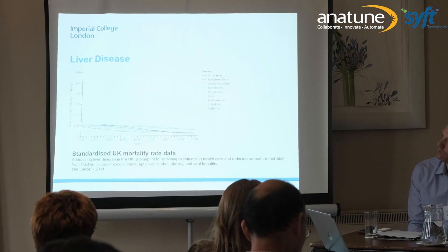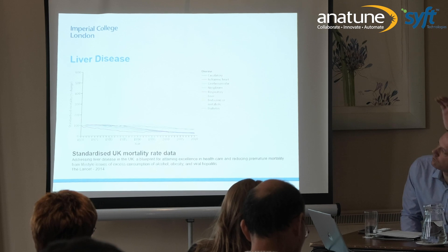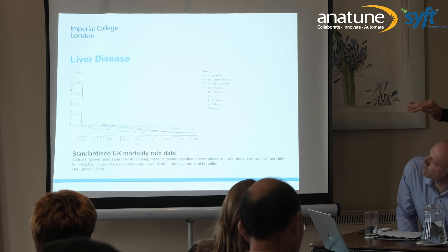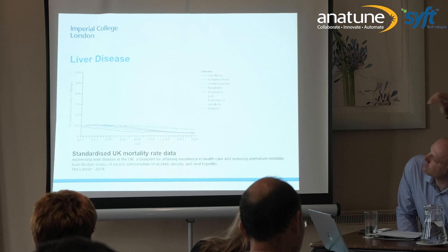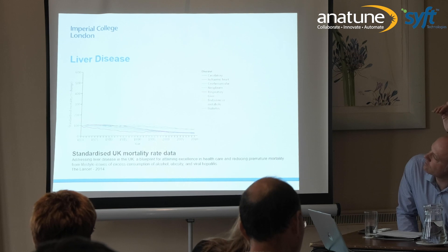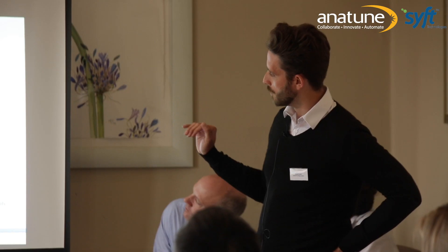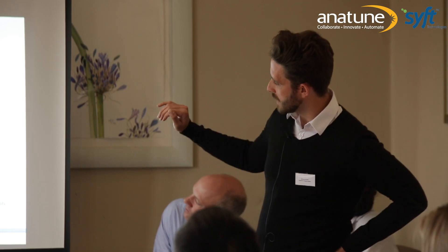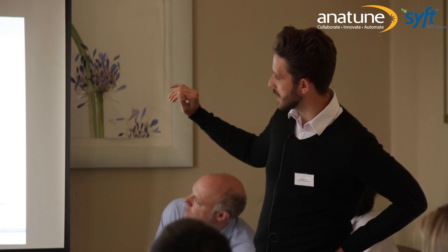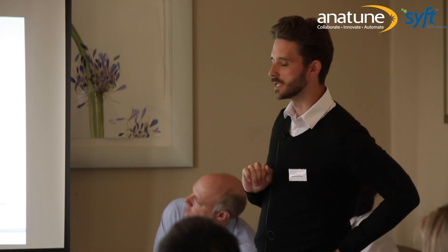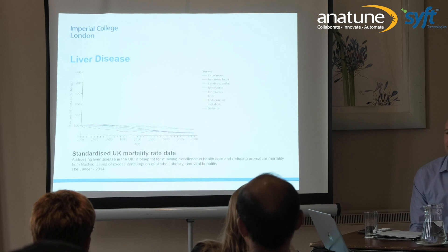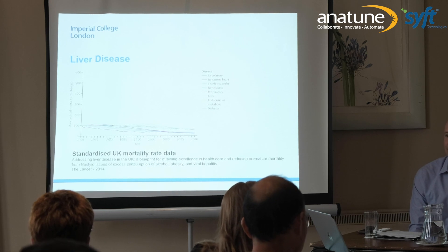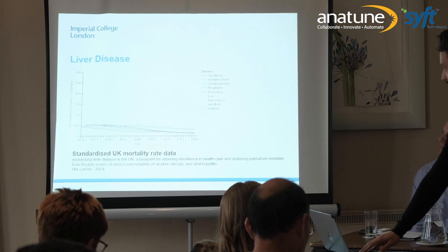In the UK we're not doing too great with liver disease. You'll see lots of lines at the bottom trending downwards — that's the vast majority of systemic diseases. But you may see an orange line slowly creeping up, which shows the issue that we have with chronic liver disease in the UK. It's an organ that we're not doing too well with in terms of treating.